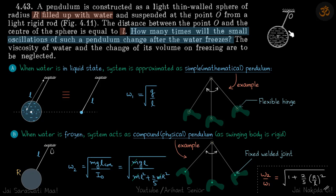We have a spherical hollow pendulum filled with water that oscillates from about this point O. Later the water freezes. We need to find what will be the change in angular velocity.